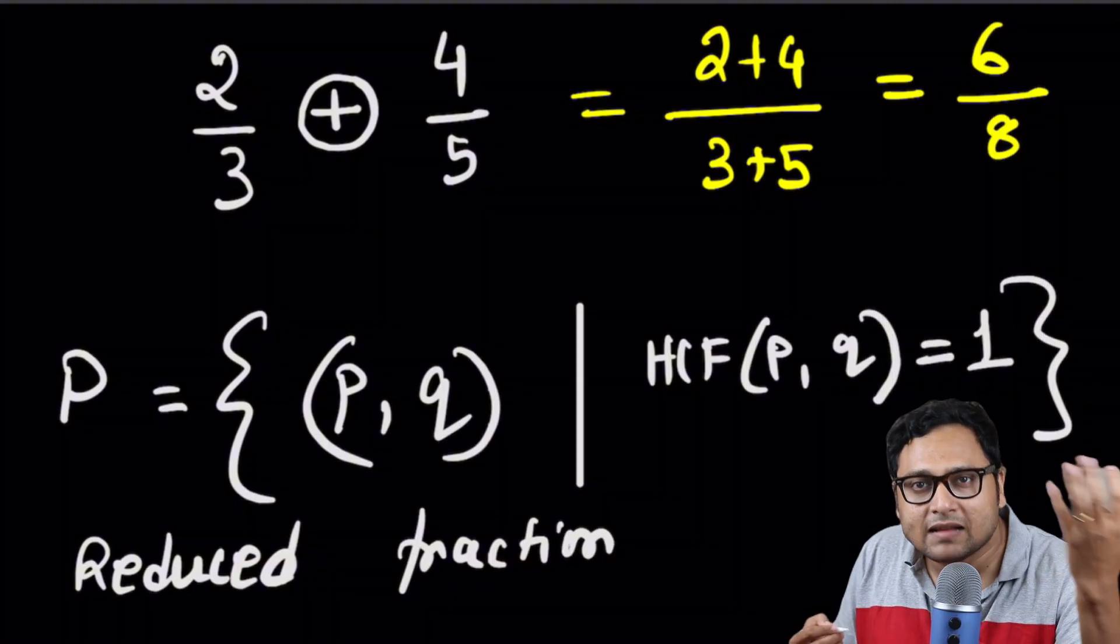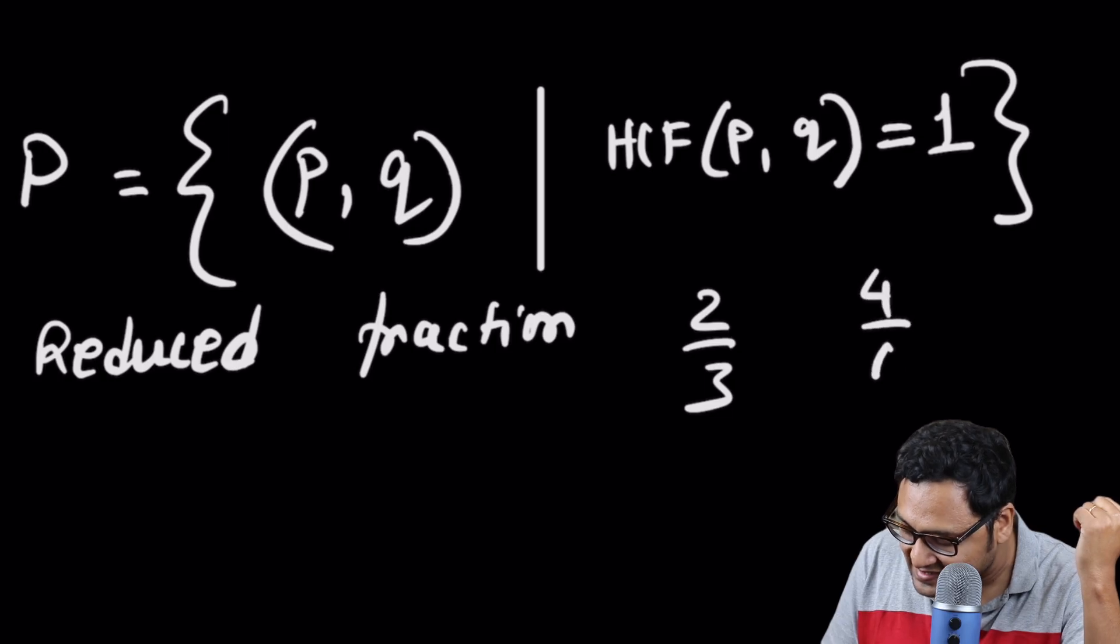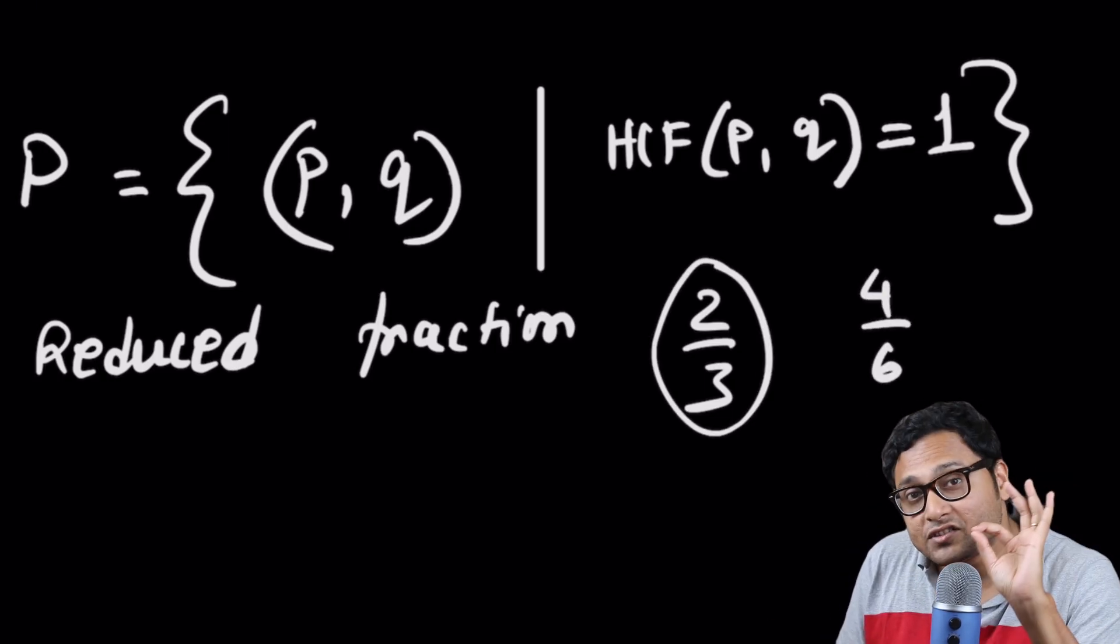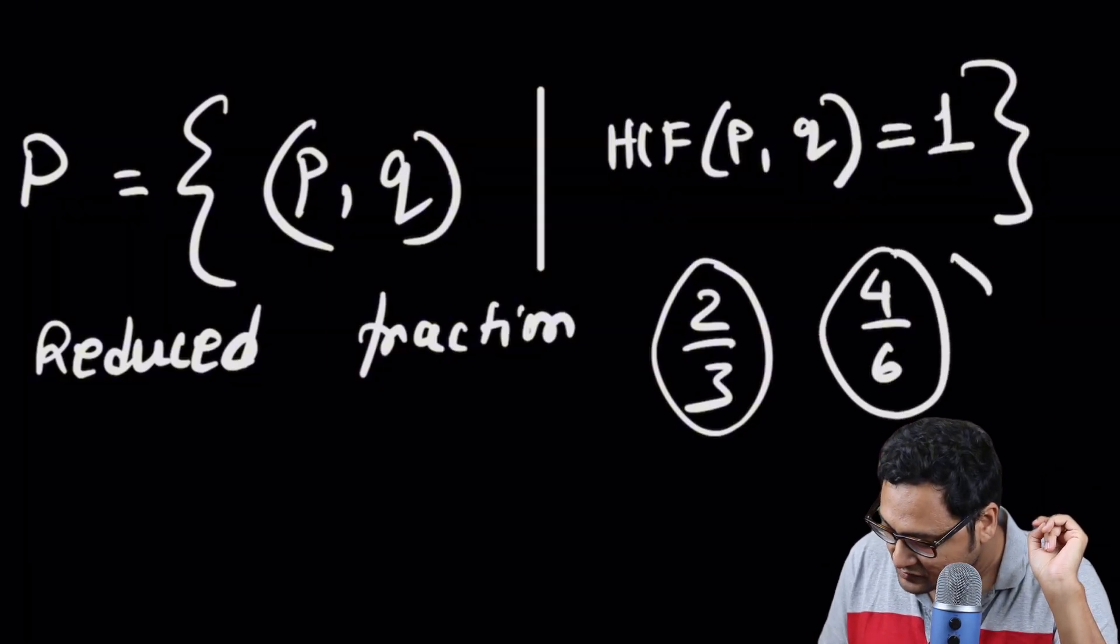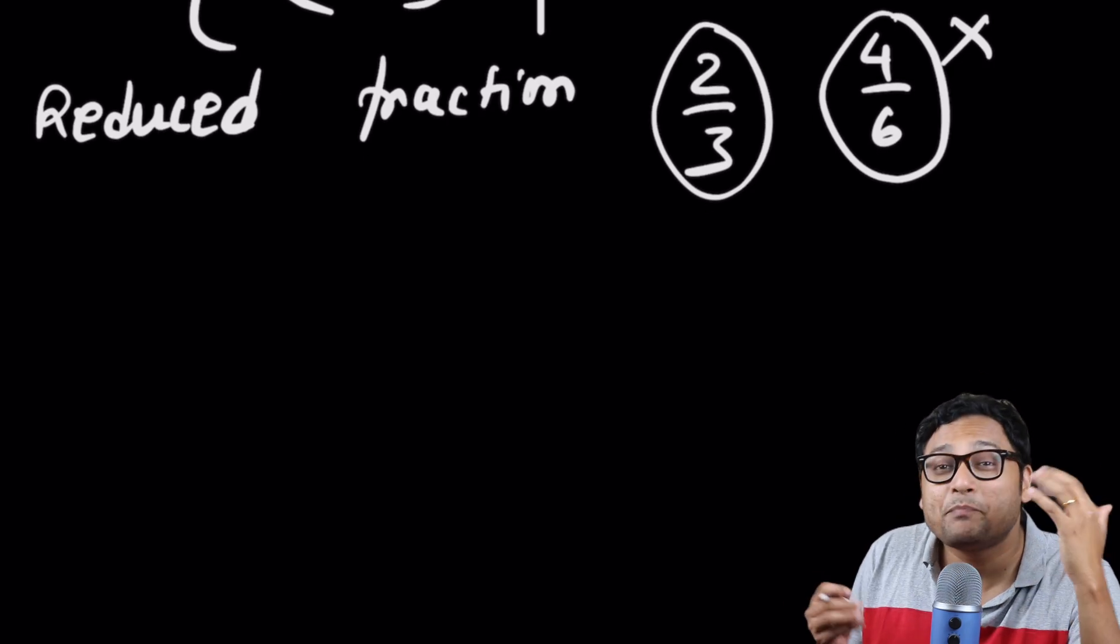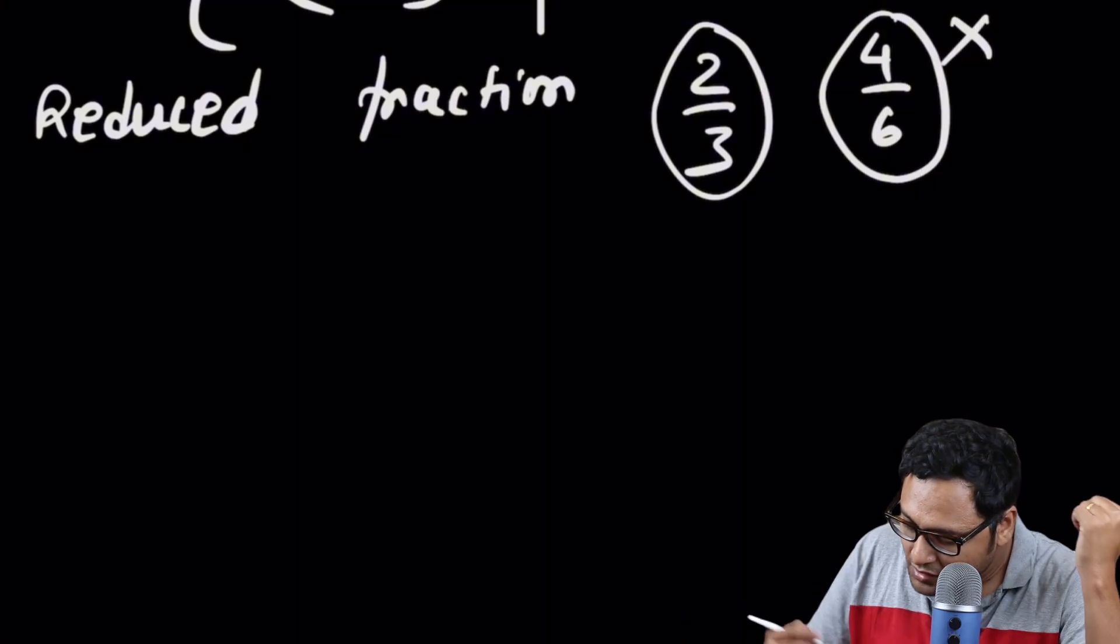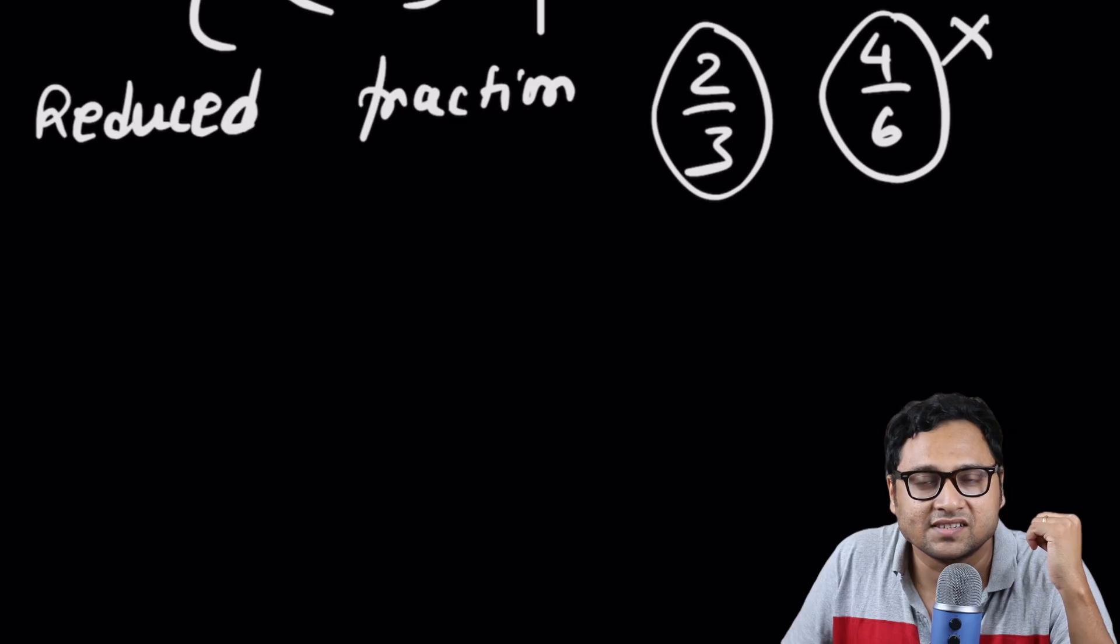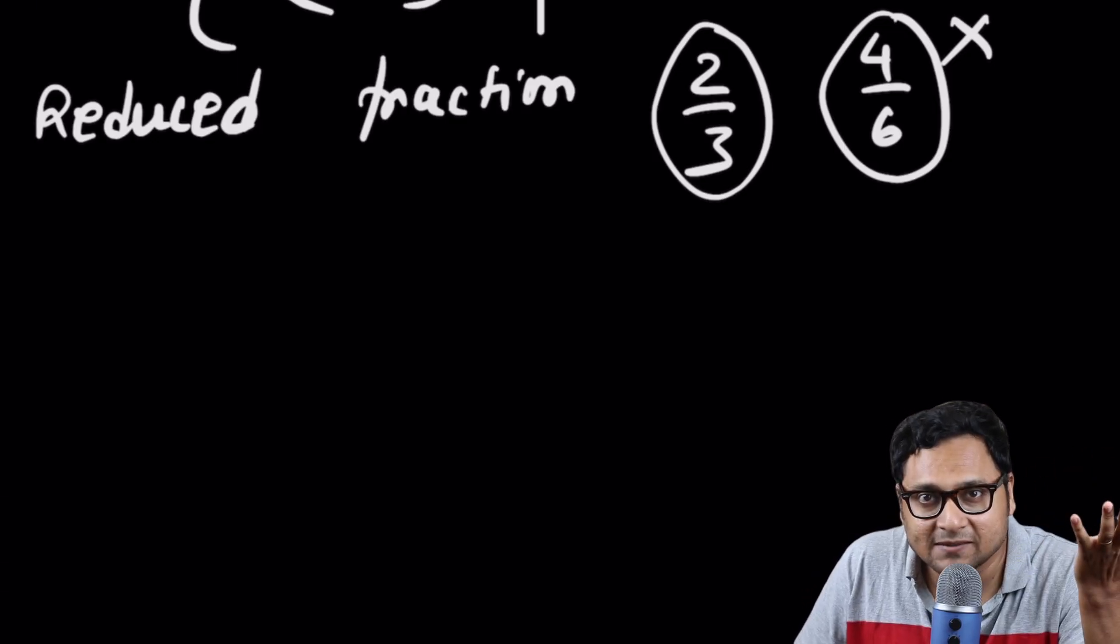You can think of this as reduced fraction. So 2 by 3 is a reduced fraction, but 4 by 6 is not a reduced fraction. The set P has a little bit more going on. Basically, we would take P,Q or minus P, minus Q. We will think of it as the same element.